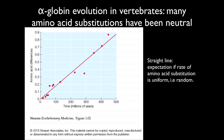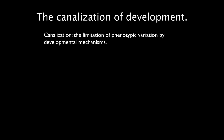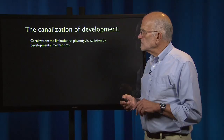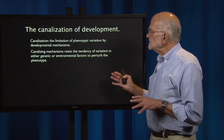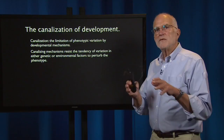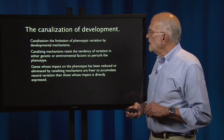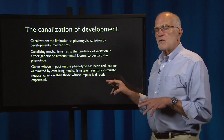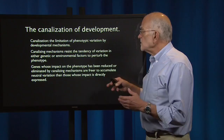The next mechanism producing neutrality in evolution is canalization — the canalization of development. Canalization means the limitation of phenotypic variation by developmental mechanisms. Canalizing mechanisms resist the tendency of variation in genetic or environmental factors to perturb the phenotype; you can think of them as buffering the phenotype against genetic and environmental variation. Genes whose impact on the phenotype has been reduced or eliminated by canalizing mechanisms are then freer to accumulate neutral variation than those whose impact is directly expressed.